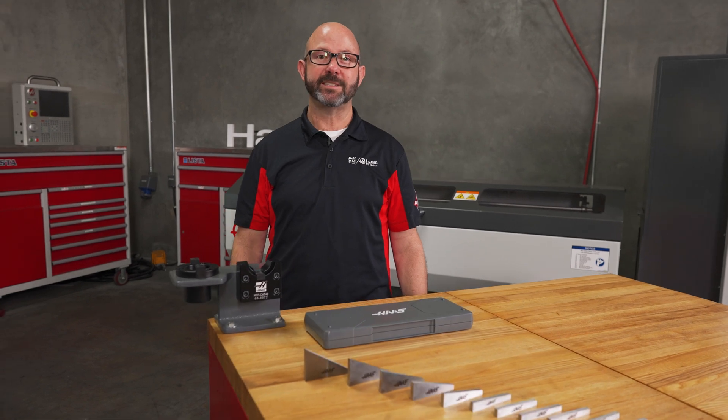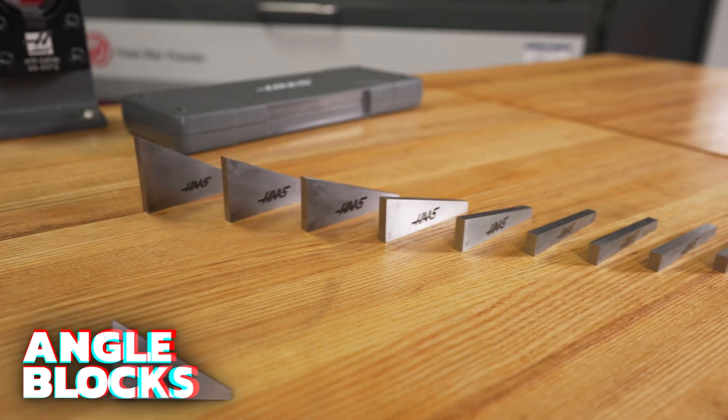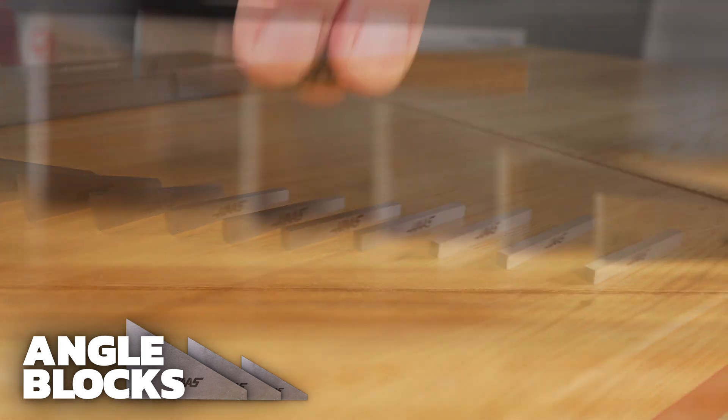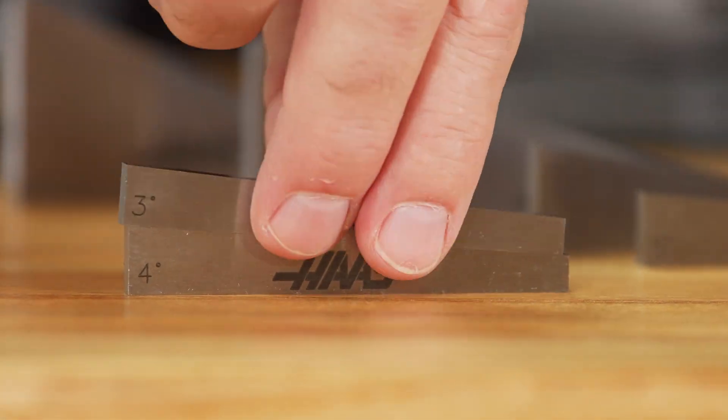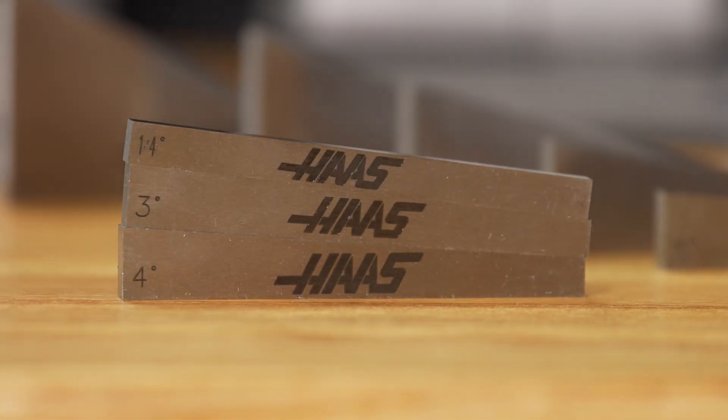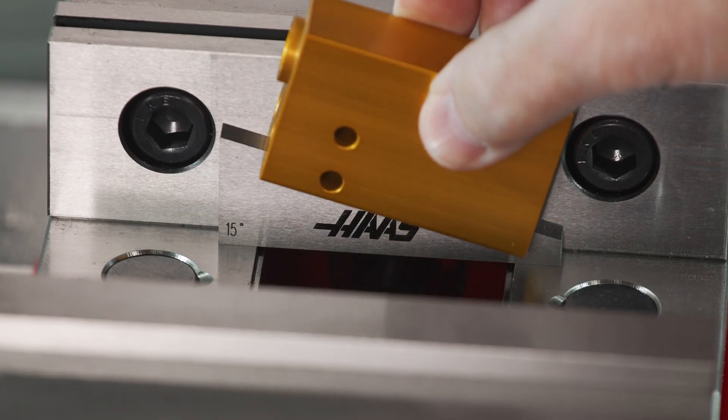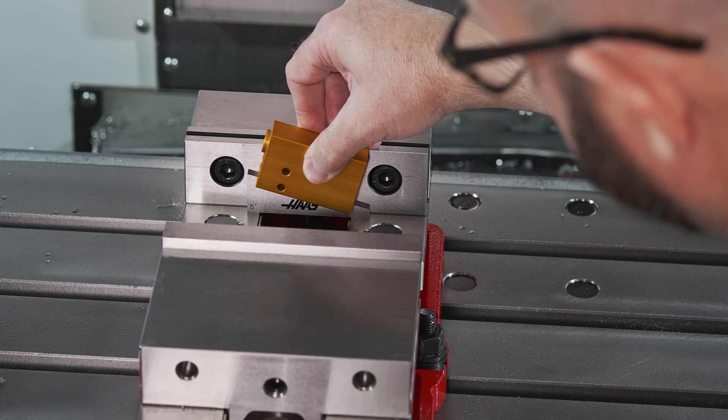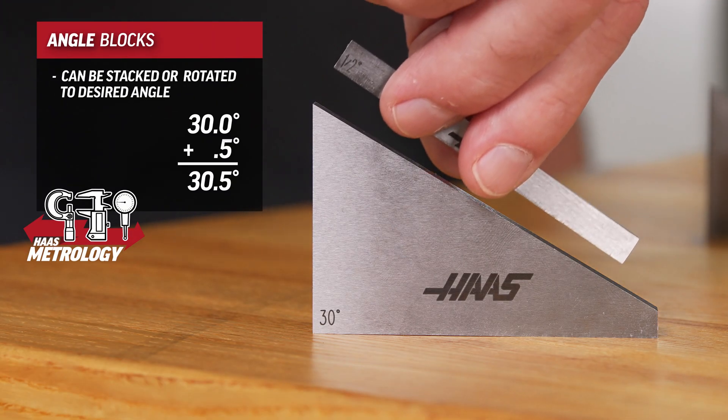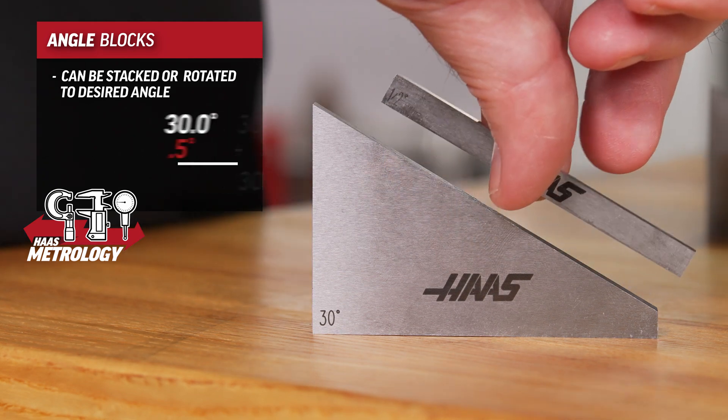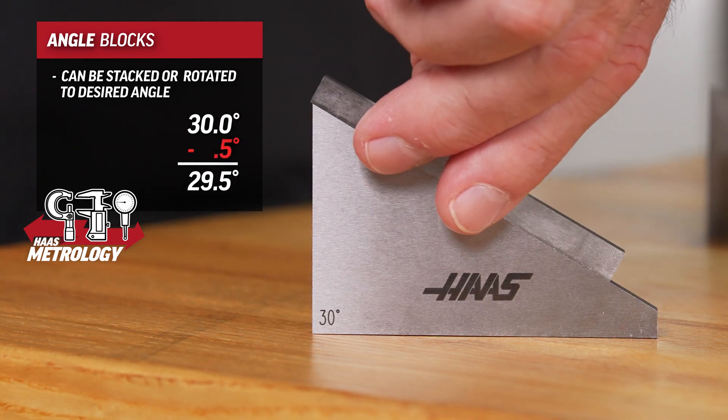For easily setting up or inspecting precision angles, we can use angle blocks one at a time or we can stack them to create any angle we'd like. I'll often use them in a vise, avoiding the hassle needed to create angled fixturing for quick jobs. And remember, these can be stacked or rotated to create the angles that we need.